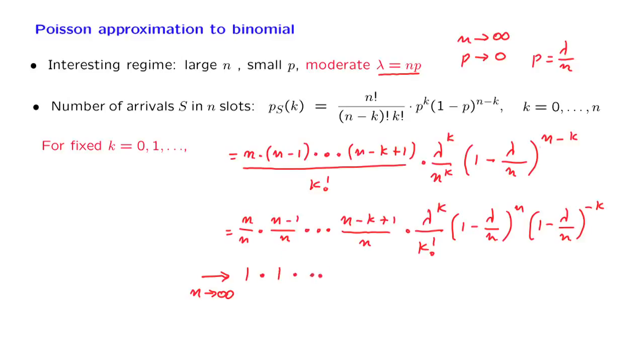And by a similar argument, all the terms in this product, including this one, converge to 1. The term lambda k over k factorial remains exactly as is.